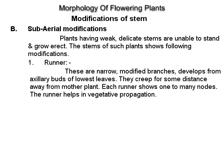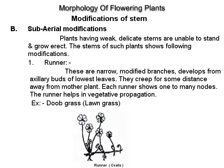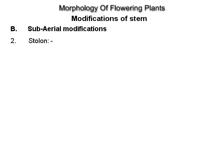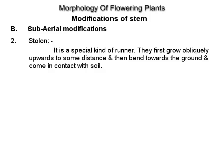Sub-aerial modifications. Plants having weak, delicate stems are unable to stand and grow erect. Runner: these are narrow modified branches which develop from axillary buds of the lowest leaves, creeping away from the mother plant. Each runner shows one-to-many nodes and helps in vegetative propagation, example dupe grass or lawn grass. Stolon: a special kind of runner that first grows obliquely upward then bends toward the ground, example fern and Mentha piperita.